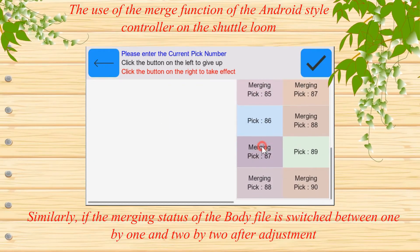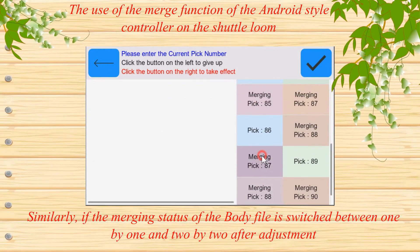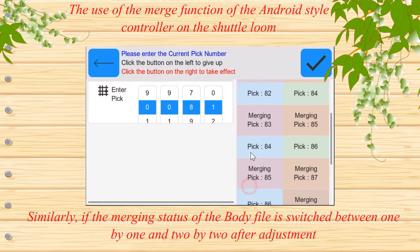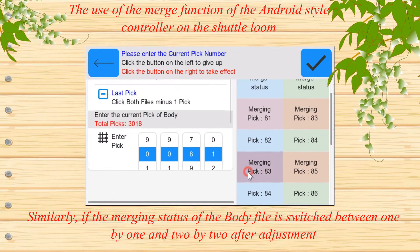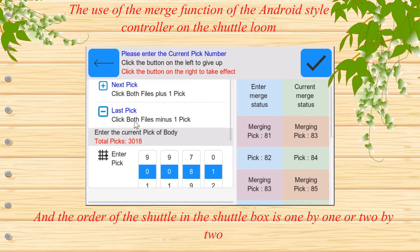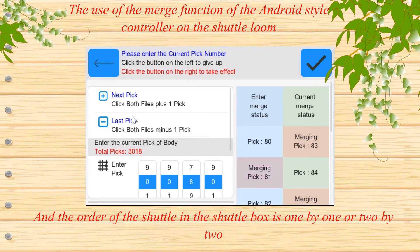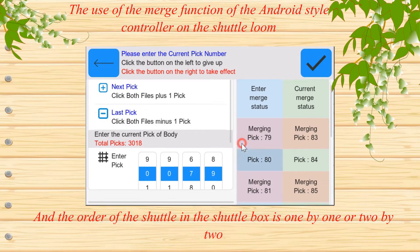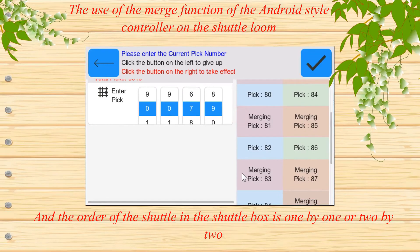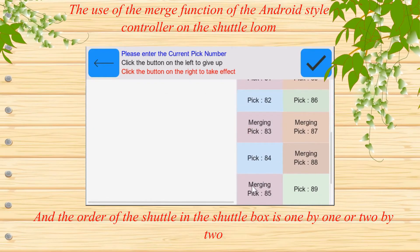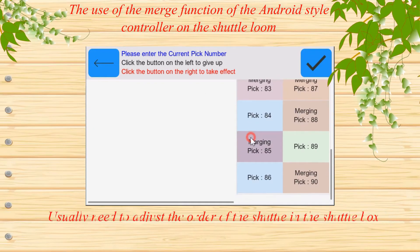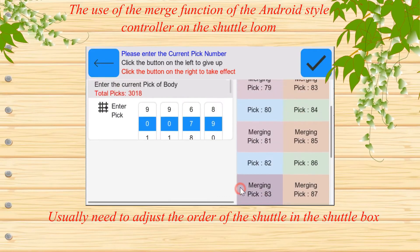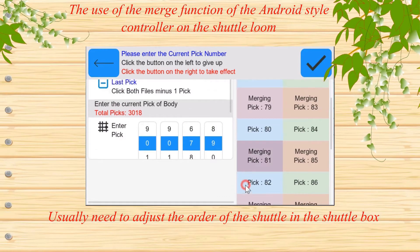Similarly, if the merging status of the body file is switched between 1x1 and 2x2 after adjustment, and the order of the shuttle in the shuttle box is 1x1 or 2x2, it is usually necessary to adjust the order of the shuttle in the shuttle box.